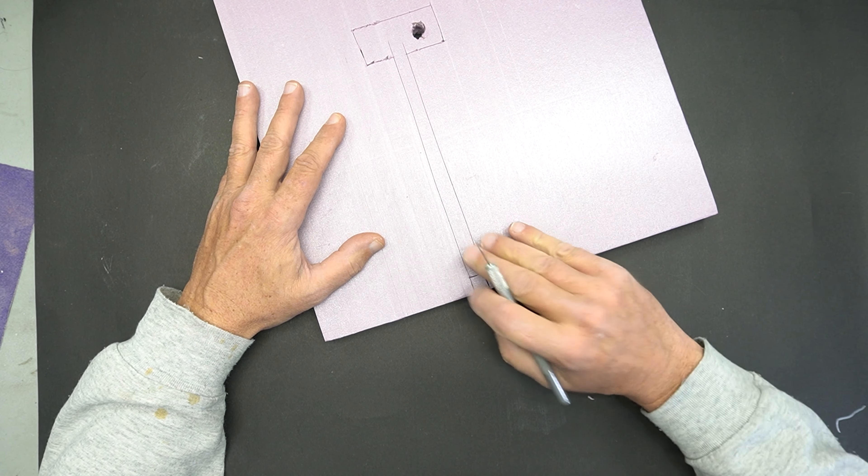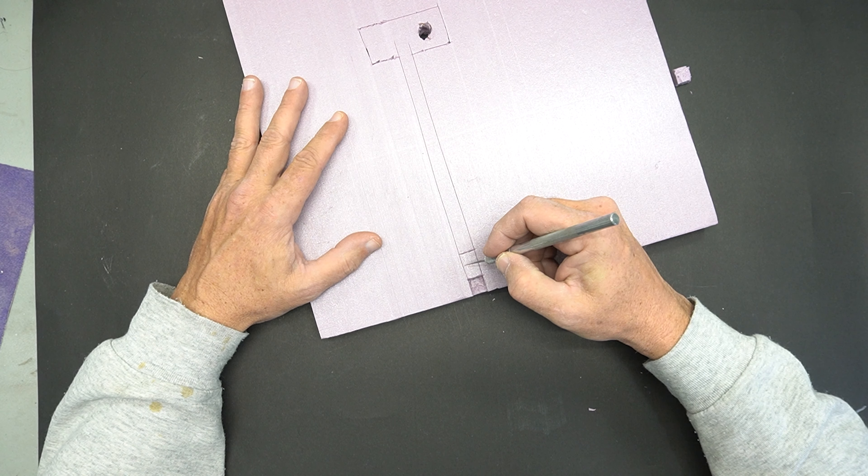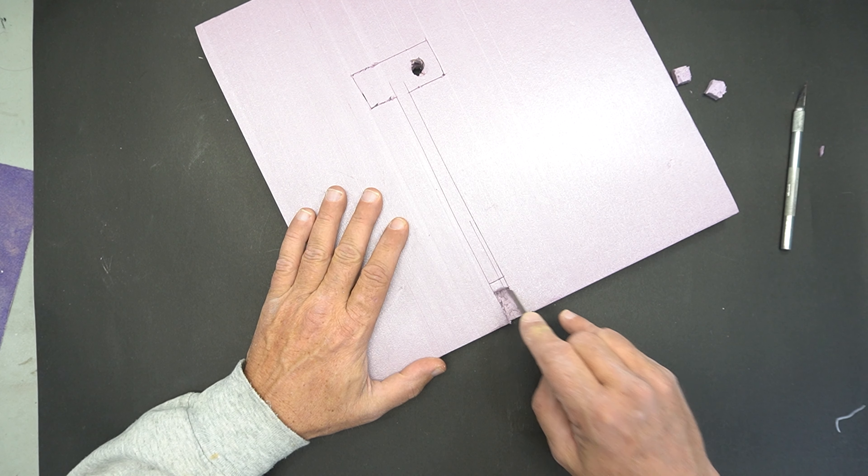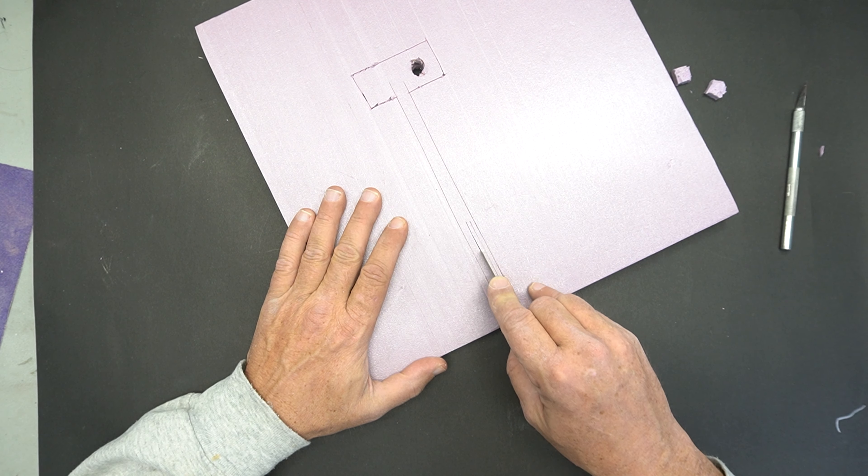Once I had the channels all marked out, I started making lines across with my X-Acto knife and trying to pull the foam out. This was not the best technique because as I got deeper and deeper in, I wasn't able to pull up that foam and make good cuts so I had to come up with another plan.